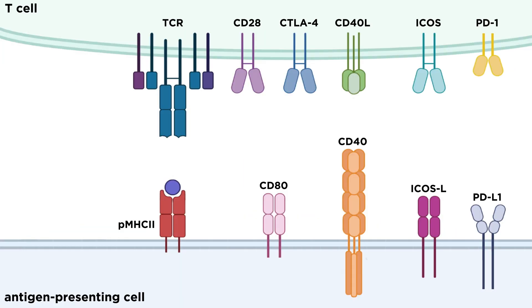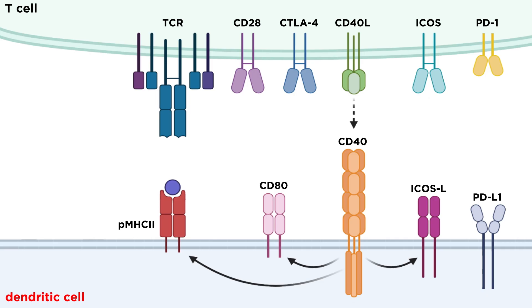T cells are not the only cells that need to receive co-stimulation. CD40 on antigen-presenting cells can bind to CD40 ligand on T cells. This interaction is critical for optimizing antibody production in B cells, but it also sends stimulatory signals to the T cells as well. CD40 binding on dendritic cells increases their expression of other co-stimulatory ligands like CD80 or CD86, creating a positive feedback loop that sustains activation of both cell types.